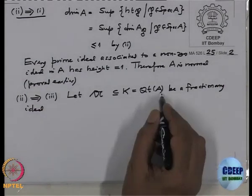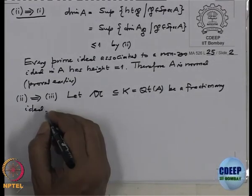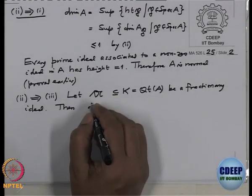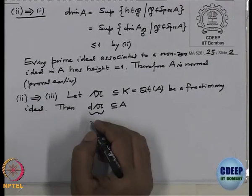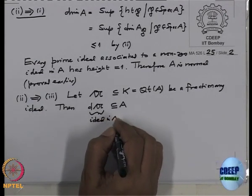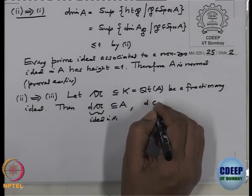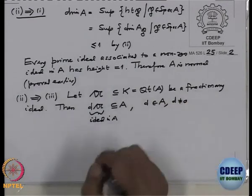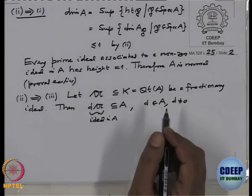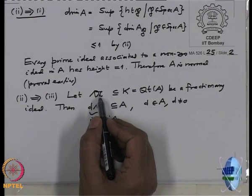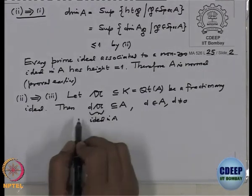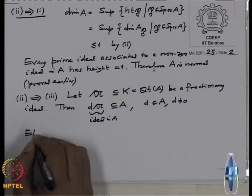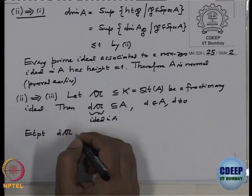That means A is a sub-module of K with a common denominator. By multiplying by common denominator d, we get d·A ⊆ A, which is an ideal for some nonzero d ∈ A. If we want to prove the fractionary ideal is invertible, it's enough to prove that d·A is invertible, because d is already invertible; multiplying by its inverse suffices. So we may assume the given fractionary ideal is actually an integral ideal.